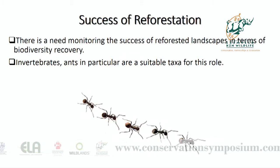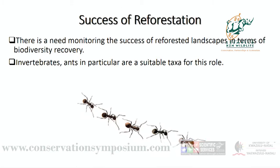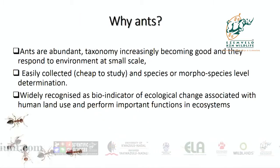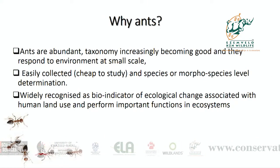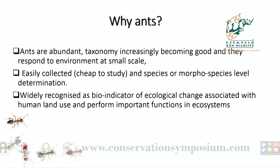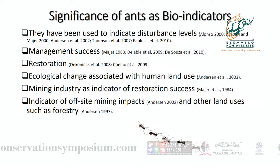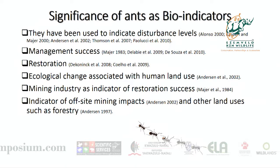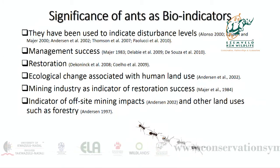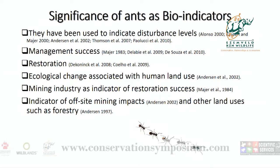And the invertebrates — ants in particular — are actually suitable taxa for this job. The reason why is not only because they are abundant, but they are easily collected. And most importantly, they are widely recognized as bio-indicators of ecological changes associated with human land use, and they perform important functions in the ecosystem. There is a lot of published literature already out there, and I've listed a number of them just to show that ants have been used as bio-indicators in different places — for instance, in forestry, the mining industry, as well as for management success.